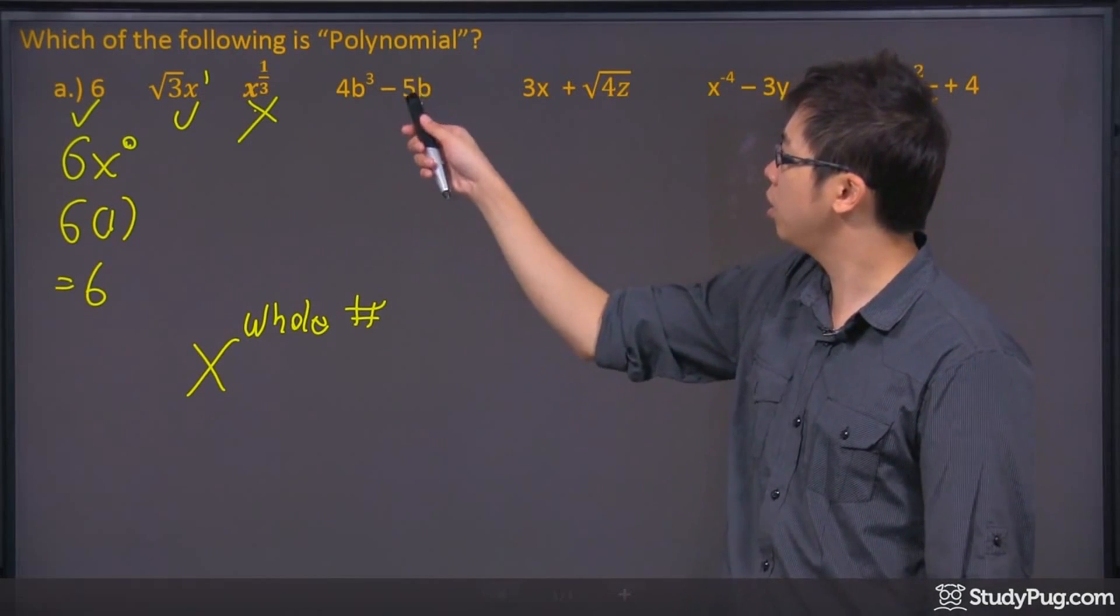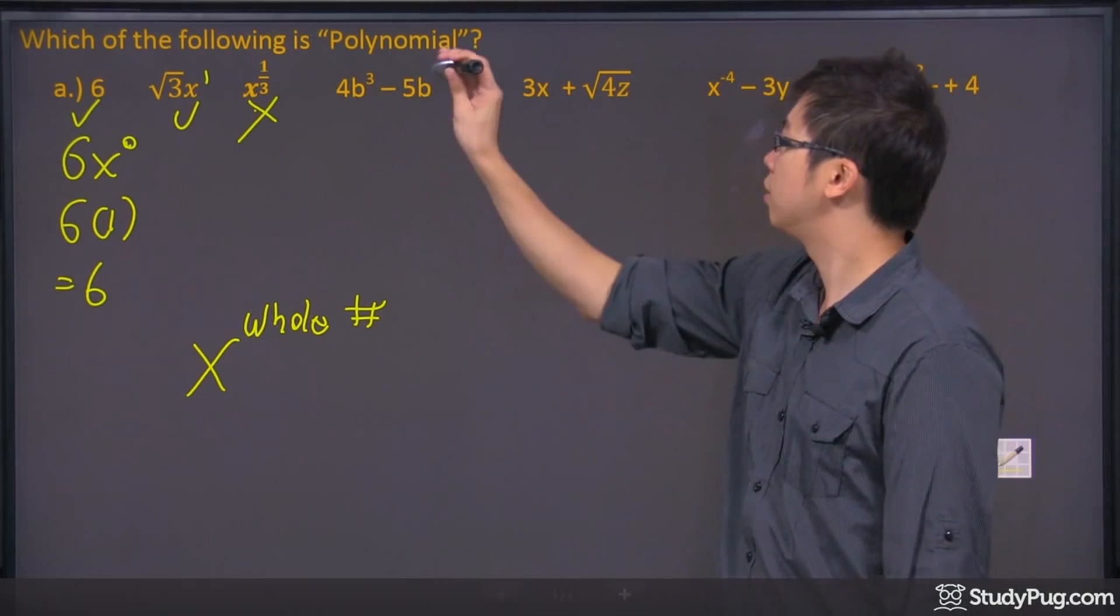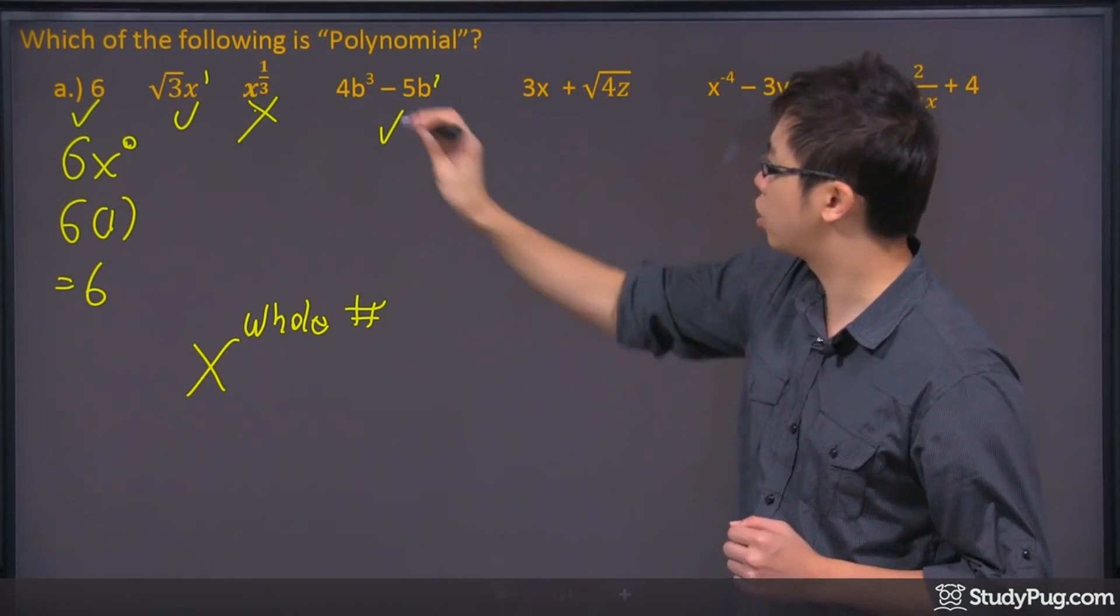That's a b to the power of 3. There's a b to the power of 1. They're all whole numbers, so that's a check mark right there.